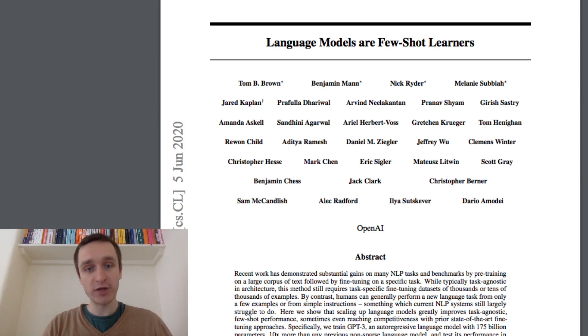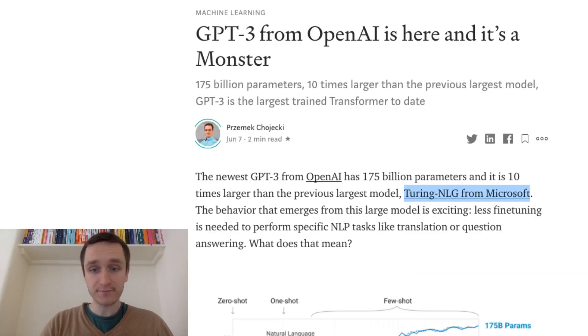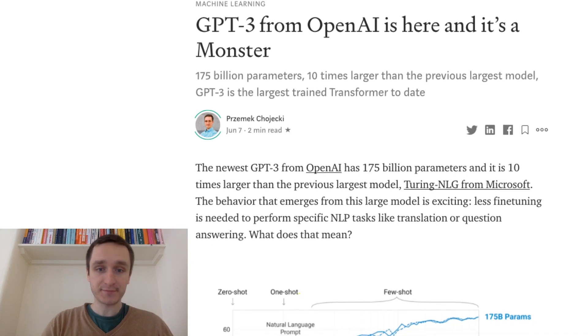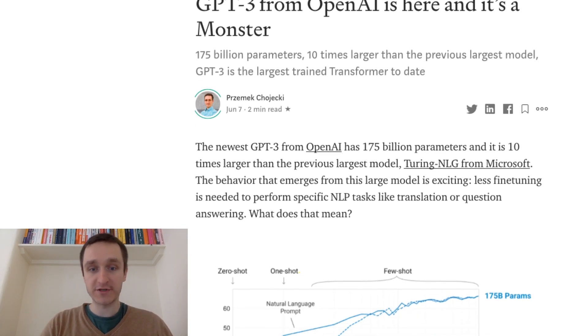But this model has 175 billion parameters, which means it's 10 times bigger than Turing-NLG, which was 10 times bigger than the largest GPT-2 to date. So that's really crazy. I will link this whole paper of them. I've prepared a short summary of what's going on and why the paper is called like that.